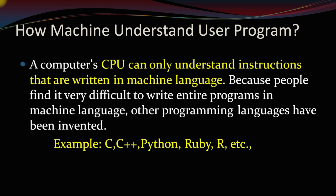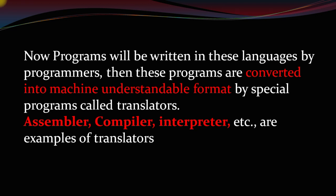How does the machine understand a user's program? We write a program in our general English-like language — in C, C++, there is some syntactical format — but we write in our understandable language. The CPU understands only machine language, so we write a program in languages like C, C++, Python, Ruby. These programs will be converted into machine-understandable format so that the machine can understand the program code, by special programs called translators. Examples are assemblers, compiler, interpreter, etc.